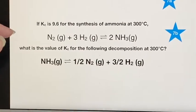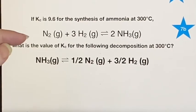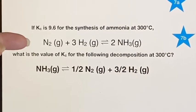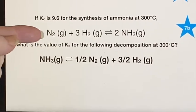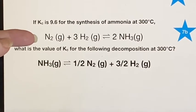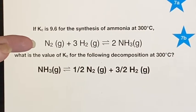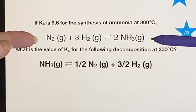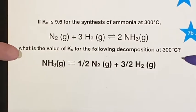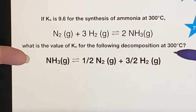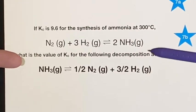Well, let's do an actual equation now. For this one, we have the equation for the synthesis of ammonia from nitrogen and hydrogen gases, and we find that if we have this formula at 300 degrees Celsius, K sub C will be 9.6. Now they want to know what's the value of K sub C for the decomposition. They've switched the order.